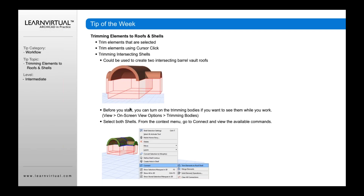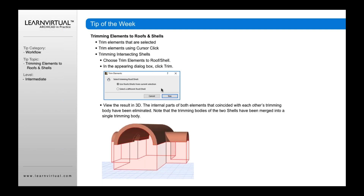The way you do that is to first turn on your trimming bodies so you can see them while you're working. Go to View menu, Onscreen View Options, and Trimming Bodies. Once done, select both shells, right-click to access the context menu, go to Connect, and Trim Elements to Roof Shell. A dialog will appear — use roof shells from current selection, click Trim, and it will trim those two shells to each other. This is a great way to merge two shells together to create connecting barrel vault roofs.